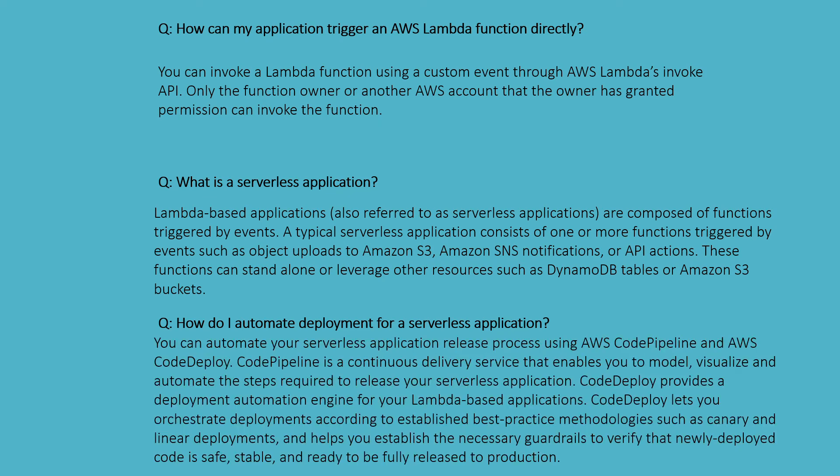How do I automate deployment for a serverless application? You can automate your serverless application release process using AWS CodePipeline and AWS CodeDeploy. CodePipeline is a continuous delivery service that enables you to model, visualize, and automate steps to release your serverless application. CodeDeploy provides a deployment automation engine for your Lambda-based application, letting you perform deployments according to established best practice methodologies such as canary and linear deployments, and helping you establish guardrails to verify that newly deployed code is safe, stable, and ready for full production release.